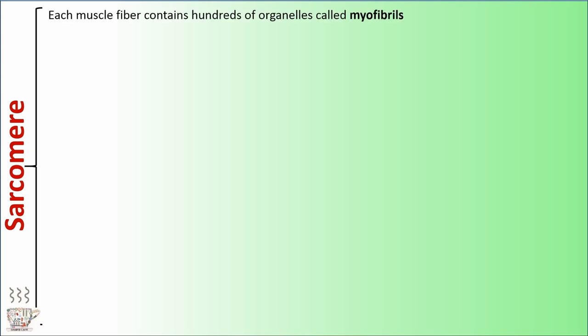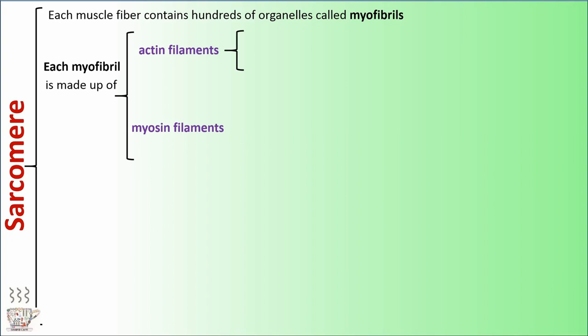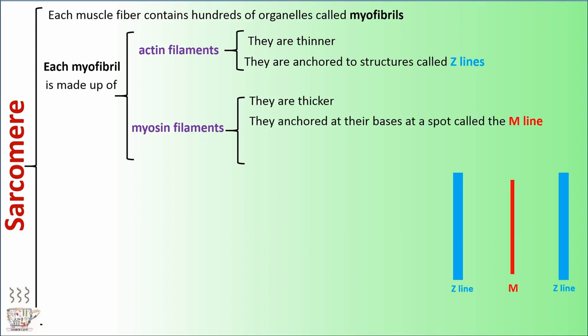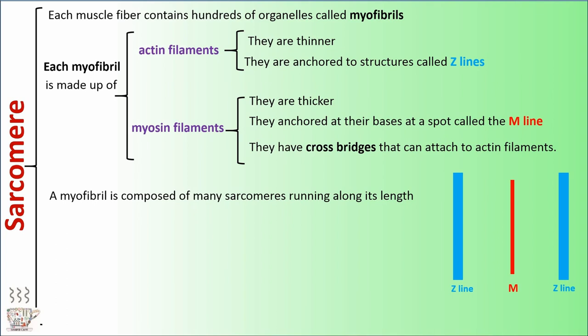Sarcomere. Each muscle fiber contains hundreds of organelles called myofibrils. Each myofibril is made up of actin filaments and myosin filaments. Actin filaments are thinner and are anchored to a structure called Z lines. Myosin filaments are thicker and anchored at their bases at a spot called the M line. They have cross bridges that can attach to actin filaments. A myofibril is composed of many sarcomeres running along its length.